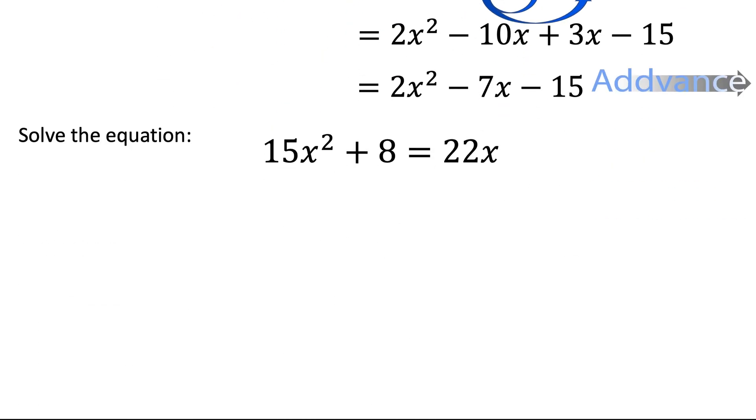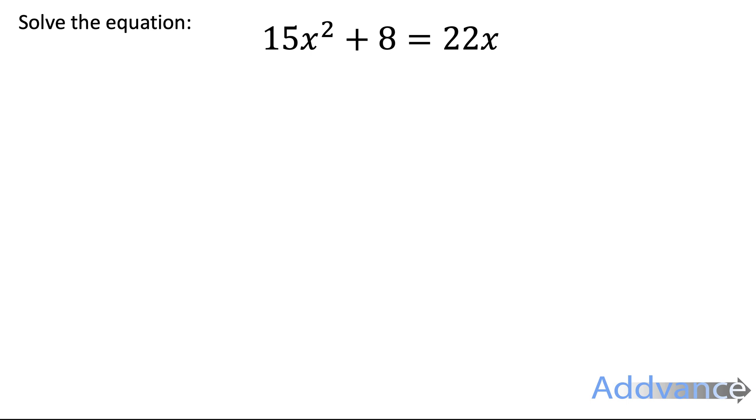Let's do another example. So here we've got 15x squared plus 8 is equal to 22x and it asks us to solve this equation. Well, we're going to factorise it. But before we factorise it, we need to make it equal to 0. So we take the 22x to the other side and we get 15x squared minus 22x plus 8 equals 0. When you're solving quadratics, always make it equal to 0 first.